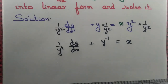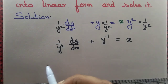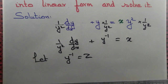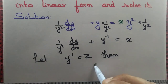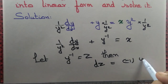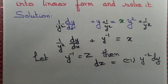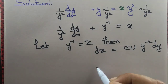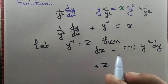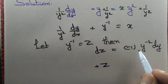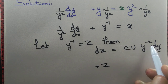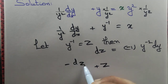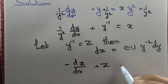Let us take y⁻¹ = z. Then dz = -1 · y⁻² dy. So the above equation can be written as: instead of y⁻¹ we write z, and since y⁻² dy = -dz, we get -dz/dx + z = x.